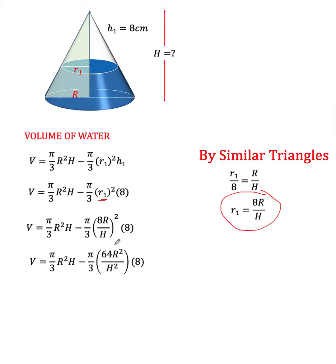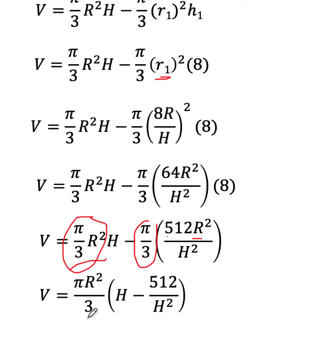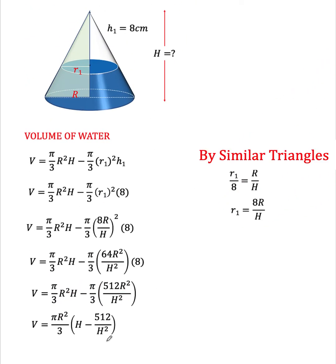Simplifying: h squared is 64, r squared is r squared, the denominator h squared becomes h squared. Then simplifying further, 8 times 64 is 512. Factoring out πr²/3, the first term divided by this common factor gives H, and the second term divided by πr²/3 results in 512 over H squared. So the volume of water equals πr²/3 times the quantity (H minus 512/H²).